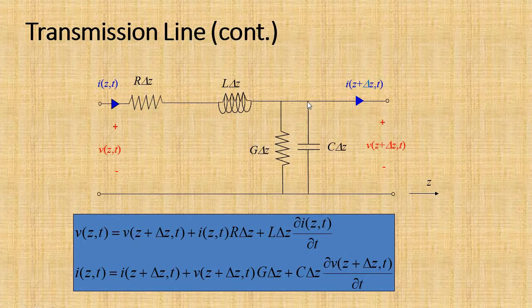Then we apply KCL at this node. We know that I(z,t) is the incoming current and I(z+Δz, t) is the outgoing current. In KCL, at a particular node the incoming current equals the outgoing current. That KCL equation has been written accordingly.